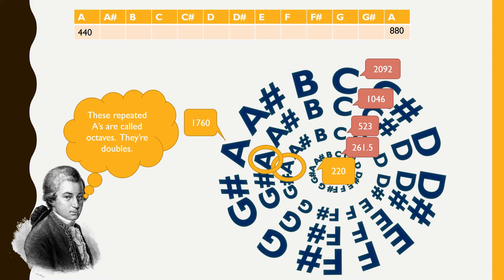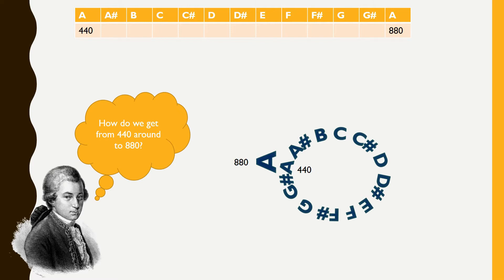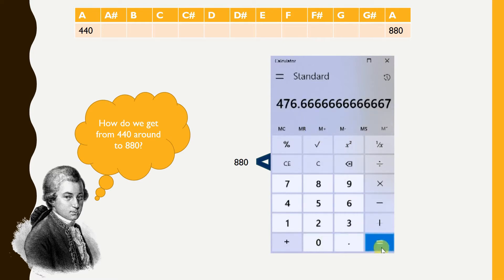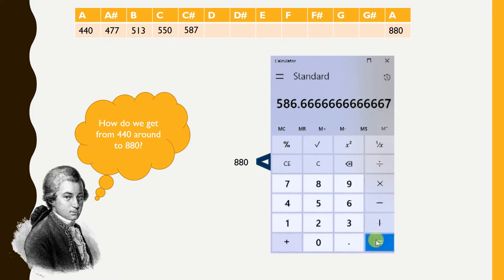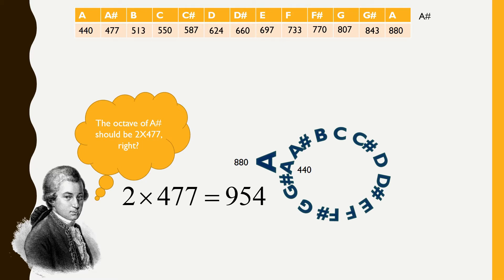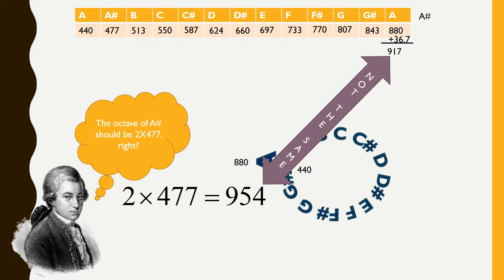That establishes a relationship between notes. When building music and trying to make it repeatable, the question is: how do we go from 440 to 880 with 12 tones in between? We could take 880 minus 440, which is 440, and divide by 12 to break it into 12 equal parts — that gives us 36 and two thirds. Adding that to 440 gives 476, then 513, then 550, and so on until we fill out all 12 notes. The problem is the next A sharp should be an octave of the first A sharp at 477, so it should be 954. But adding 36.6 repeating gives 917 — not the same. That's a big problem.